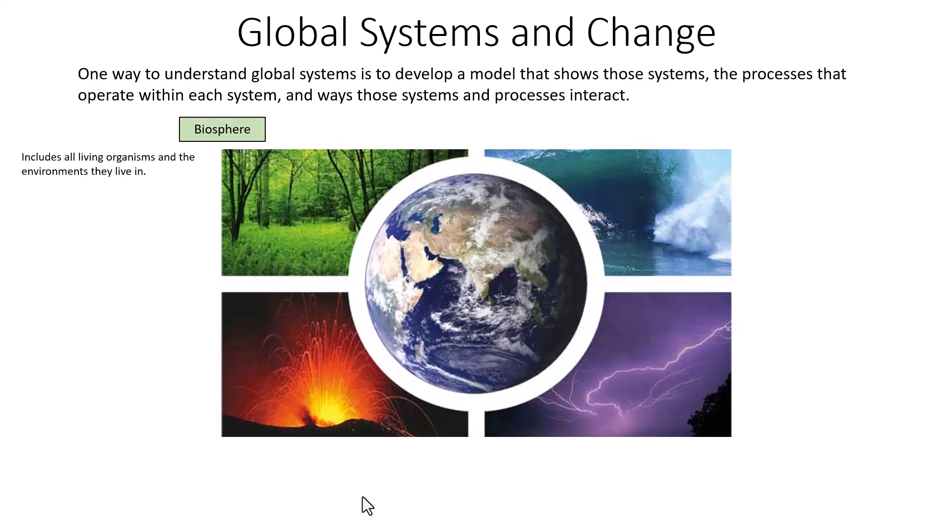The first of the four global systems is the biosphere. We've spoken about the biosphere in previous videos — it includes all living organisms and all of the environments those organisms live in on the planet. It includes all aspects of the Earth: plant life, animal life, insect life, bacteria — all of those help to shape the biosphere, which is the physical living environment that all living organisms reside in.